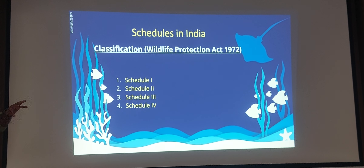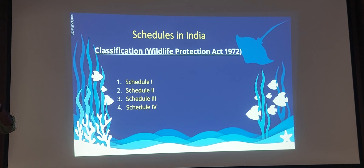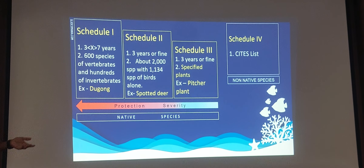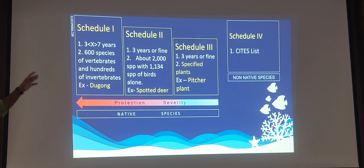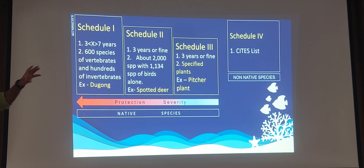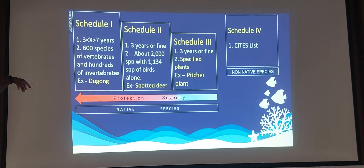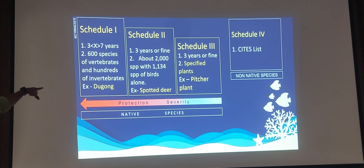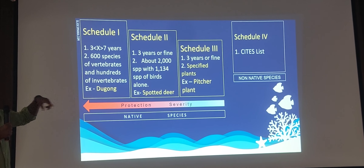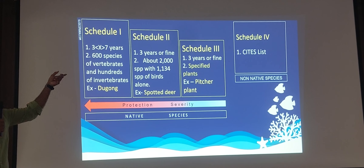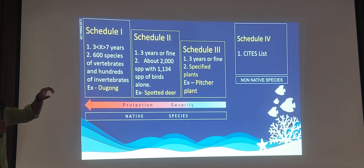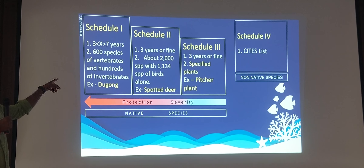Next is the schedule system. According to the Wildlife Protection Act in India, there are four schedules — Schedule 1, 2, 3, and 4. Schedule 1 is the most protected. Dugong is in Schedule 1, while the Dugong Conservation Reserve is a category 3 area. So the animal itself has the highest level of legal protection.